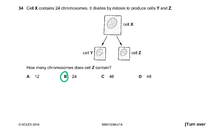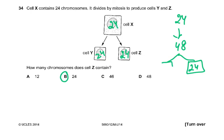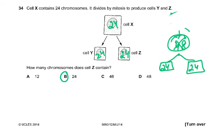Question 34: cell X contains 24 chromosomes. It divides by mitosis to produce cells Y and Z — both will have 24. How many chromosomes does cell Z contain? The normal definition of mitosis is that it results in two genetically identical cells. Cell Z has 24. What happens is the 24 chromosomes first become 48 through DNA replication, and then two cells are formed each with 24. So chromosome number doubles first, then two daughter cells are formed, genetically identical to the original.